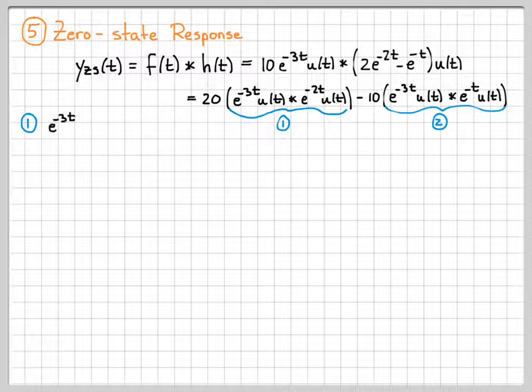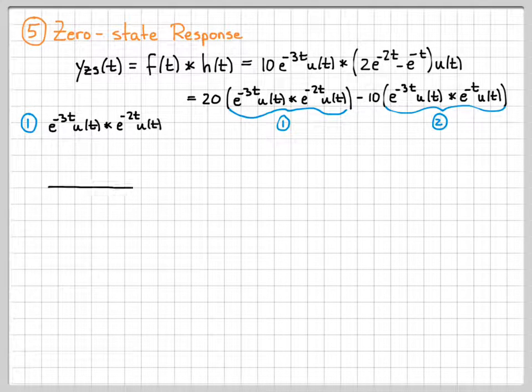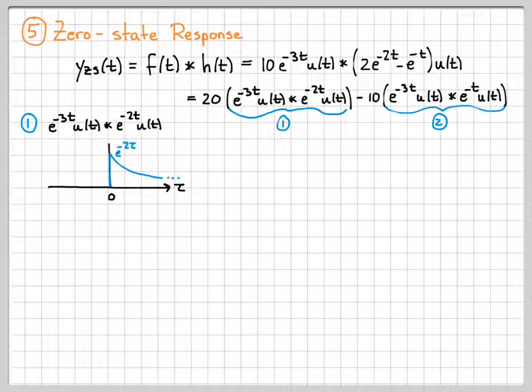So part one, I need to compute e to the negative 3t u of t convolved with e to the negative 2t u of t. So this is convolution, so I'm in the tau domain. So here is my signal e to the minus 2 tau. And then this is going to be the signal that I'm going to time reverse and shift.